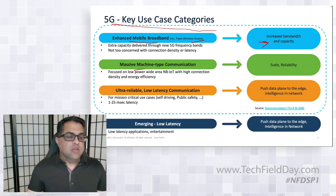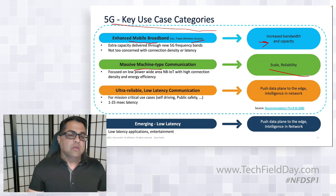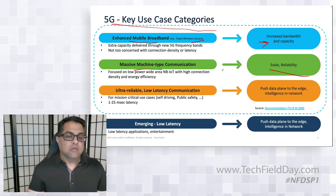The second use case is massive machine type communication, MMTC. This means scale and reliability. It doesn't require high bandwidth — it's more about scale and low bandwidth — but reliability is important.